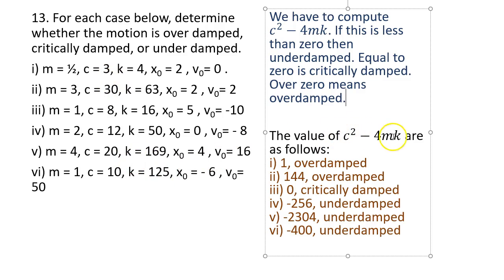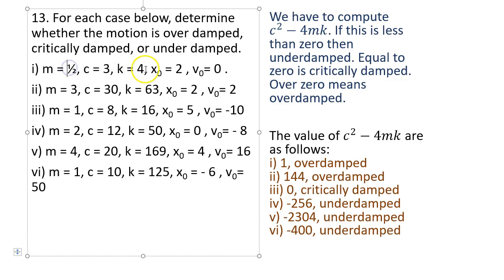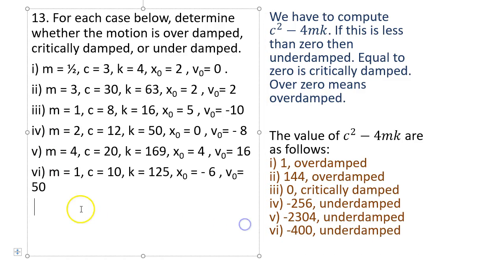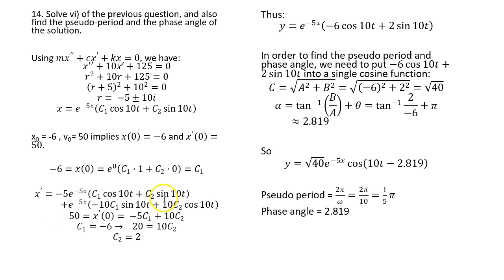To determine damping type, compute c² - 4mk. For example in item 1: 3² - 4(1/2)(4) = 9 - 8 = 1. Since this is above zero for items 1 and 2, those are over-damped. Item 3 gives zero, so it's critically damped. Items 4, 5, and 6 all have negative values, so they are under-damped.